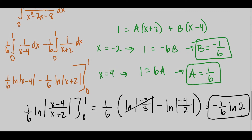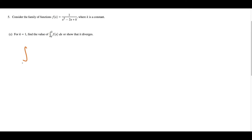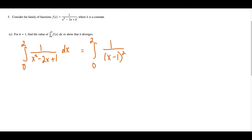For the last part of this question, we want to evaluate the definite integral from 0 to 2 of f of x when k equals 1. We've got 1 over x squared minus 2x plus 1. The first thing we can do is factor the bottom, giving us the integral from 0 to 2 of 1 over x minus 1 squared dx. Glancing at this, you can see that at x equals 1 this expression would be undefined, and 1 is a value between 0 and 2 — which tells us we have an improper integral with a discontinuous integrand.